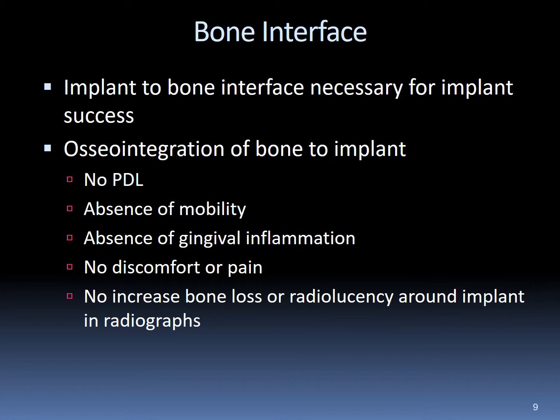Implant-to-bone interface is necessary for implant success. The osseointegration of bone to implant will not develop a periodontal ligament and is absent of the slight natural mobility compared to natural teeth. Successful implants are absent of gingival inflammation and pain. There should be no increased bone loss or radiolucencies around the implant on radiograph. If this appears, the implant is at risk and immediate attention is sought.